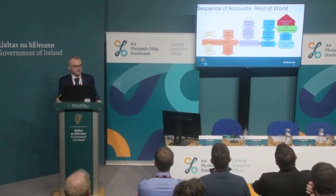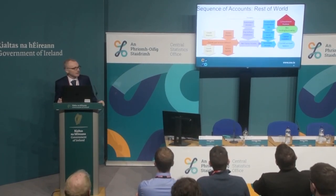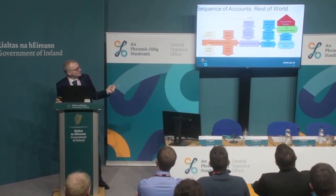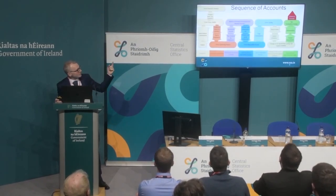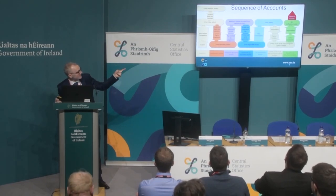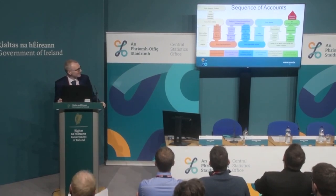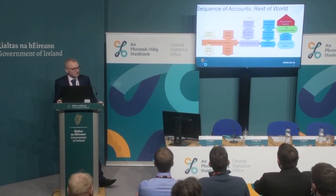The change in the international investment position due to transactions should be the same as the net lending borrowing with a few errors and omissions for the whole account. The difference between the current account balance and net lending is just capital transfers. And as we saw earlier, the difference between gross saving and net lending borrowing is capital investment plus capital transfers. So by a bit of cancelling both sides, gross saving less investment is the current account balance — and James is going to talk about that a bit later. So that's the depth of the account — a long sequence that gives you a lot of detail about all the transactions in the economy.